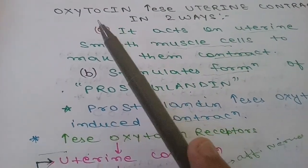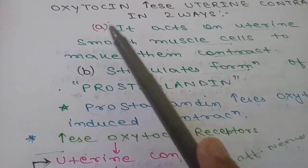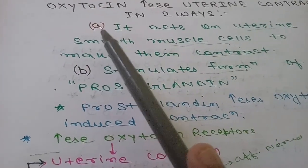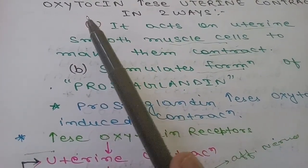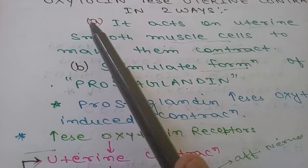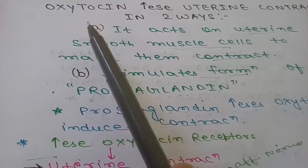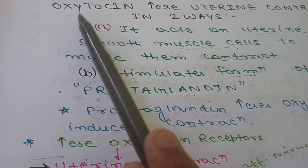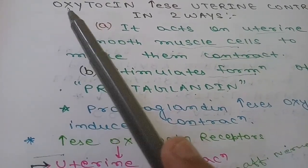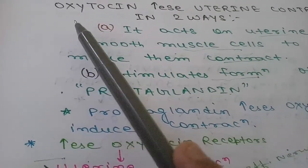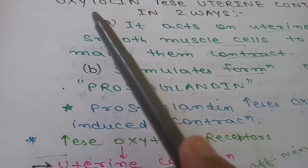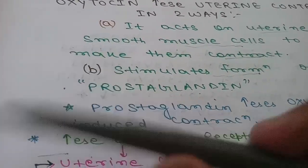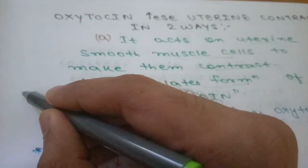A more important point about oxytocin is that estrogen increases the number of oxytocin receptors as we discussed. But in early labor, the oxytocin concentration in maternal plasma is not elevated in comparison to pre-labor values.